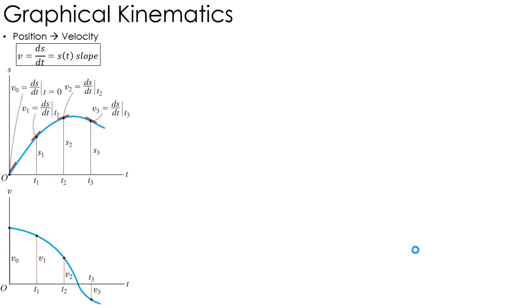Next thing we need to talk about is what I'm calling graphical kinematics. And what happens is a lot of times we actually don't have an equation. We just have a graph of our velocity as a function of time. And how can I move back and forth from velocity to position, position to acceleration, what have you. And we can use what we know about derivatives and integrals to do that.